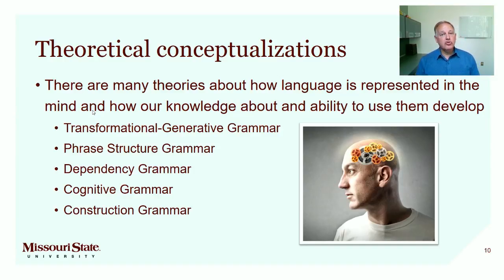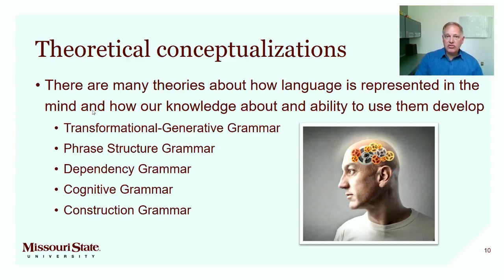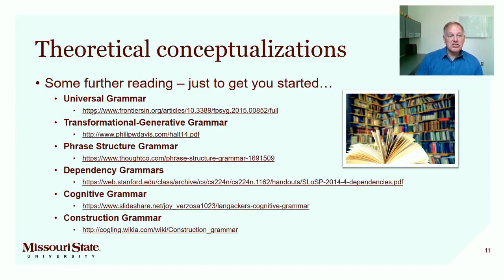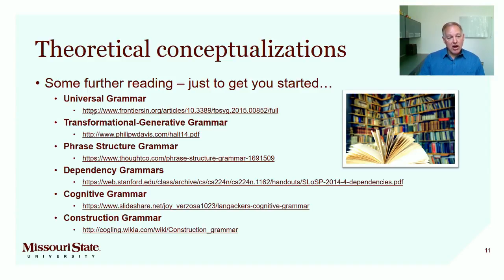Phrase structure grammar and dependency grammar are two ways of representing grammar and language in the mind. Transformational generative grammar, phrase structure grammar, and dependency grammars are kind of breaks from that earlier structuralist and behaviorist perspective. And then cognitive and construction grammars are breaks from this more formalist approach. If you download this PowerPoint from Blackboard, you'll be able to click on these links and see a very basic introductory reading about universal grammar, transformational generative grammar, phrase structure and dependency grammars, and what I find really interesting — cognitive and construction grammars, which kind of eliminate the distinction between lexis and syntax.